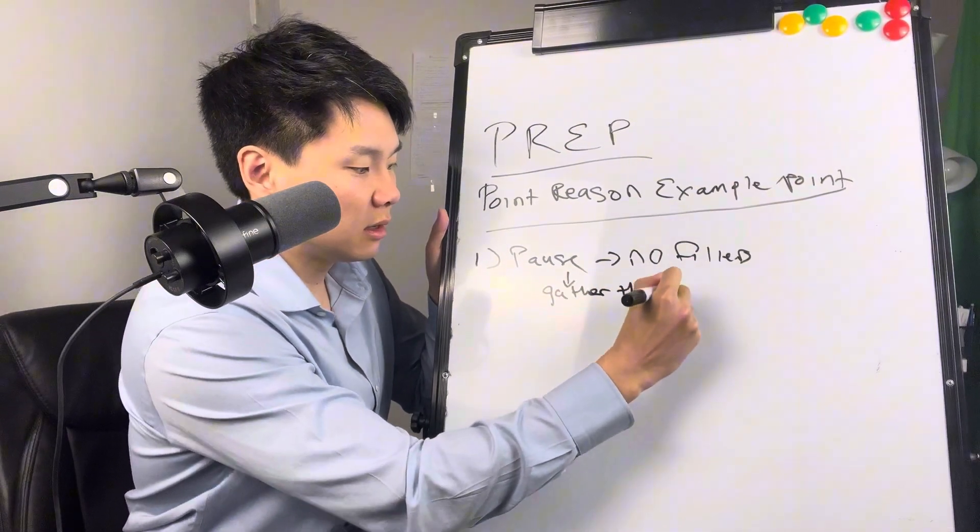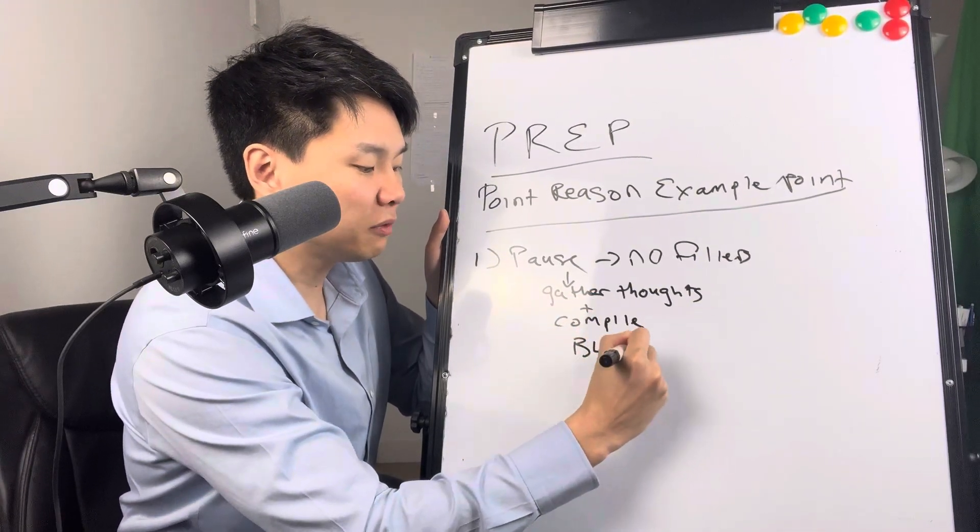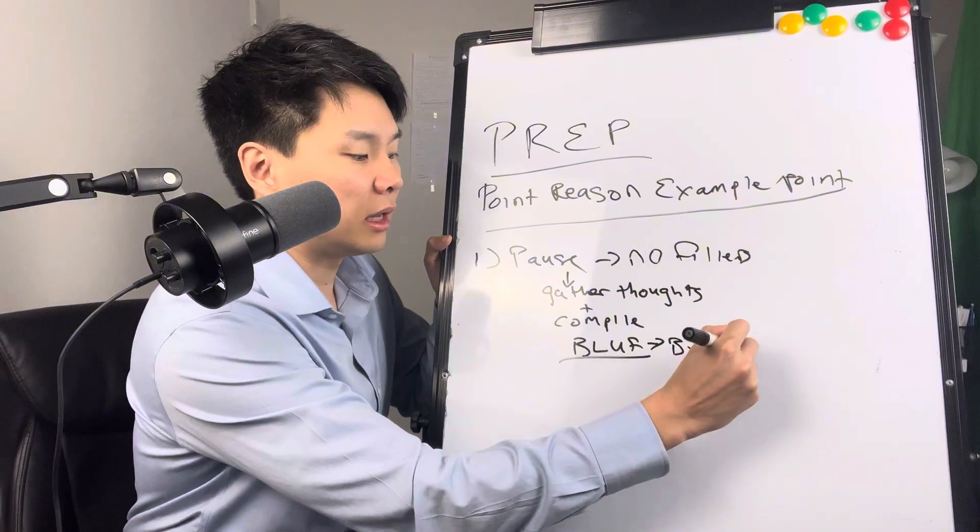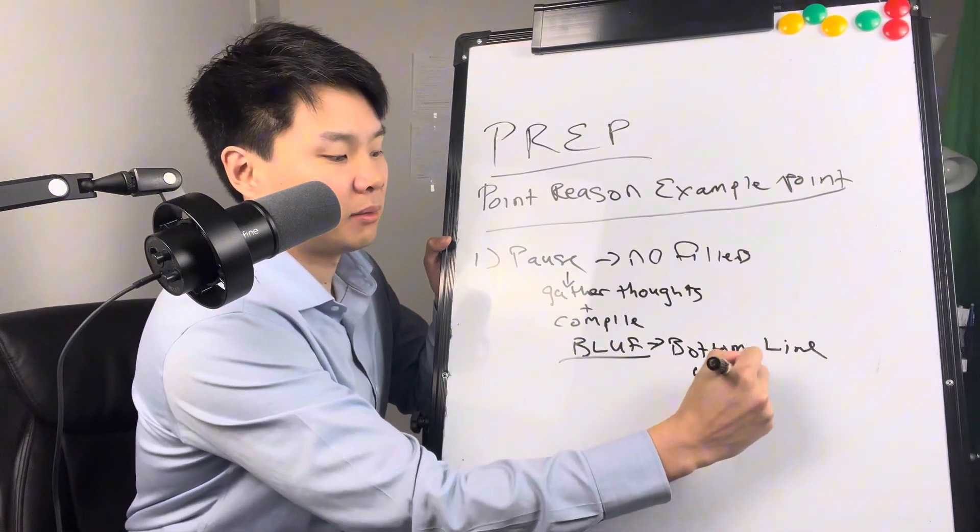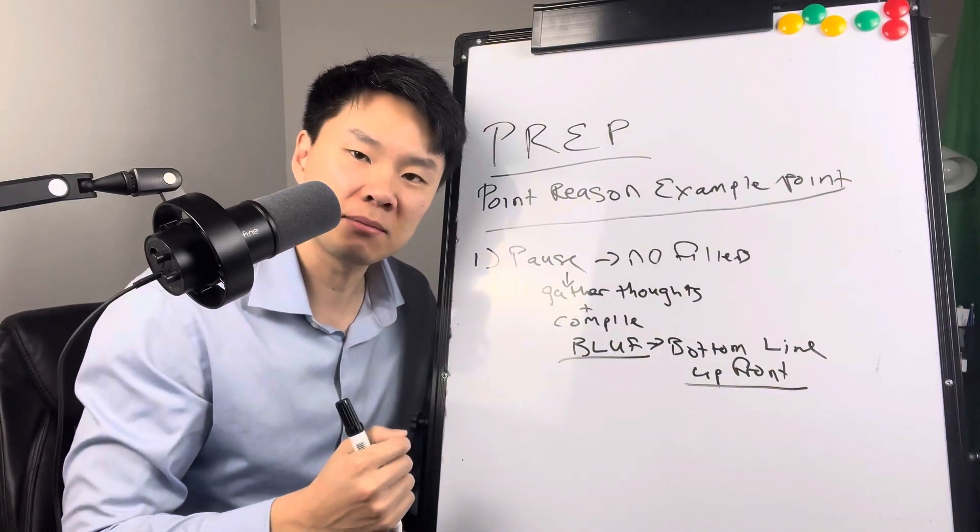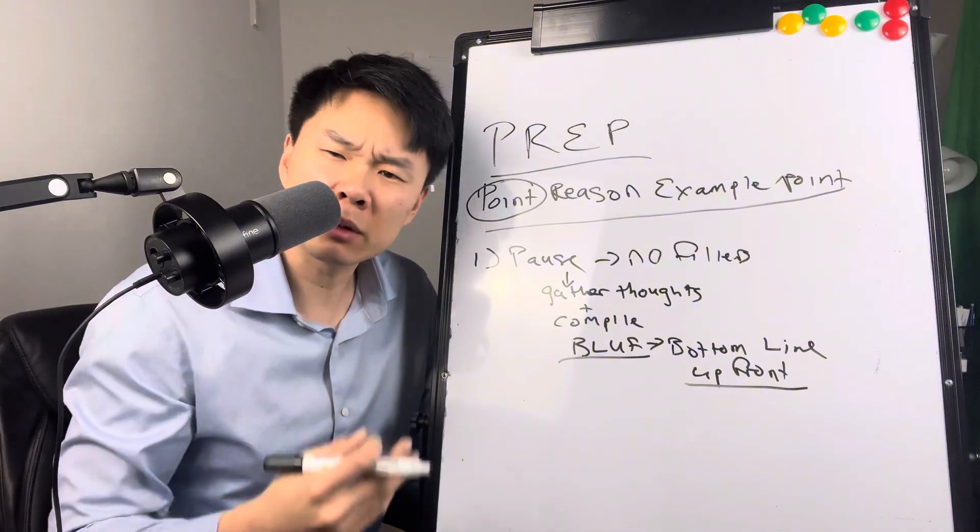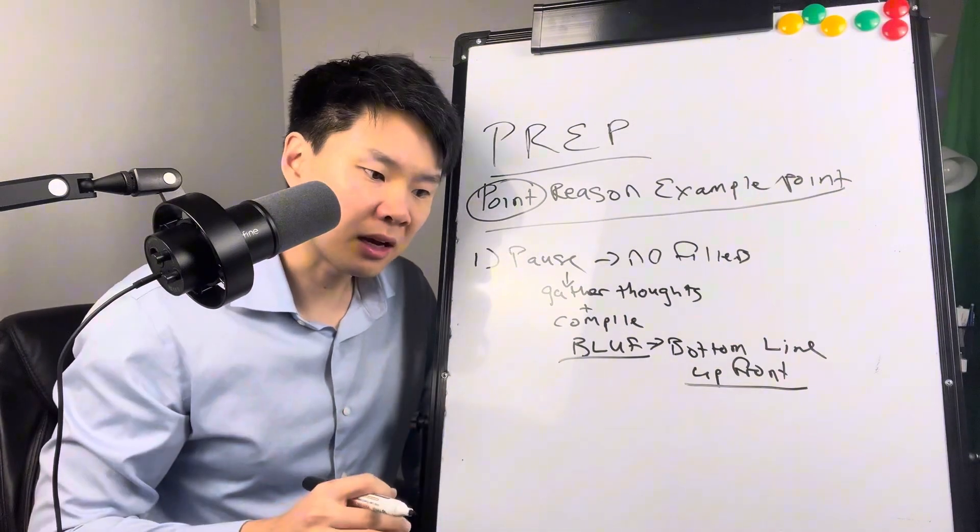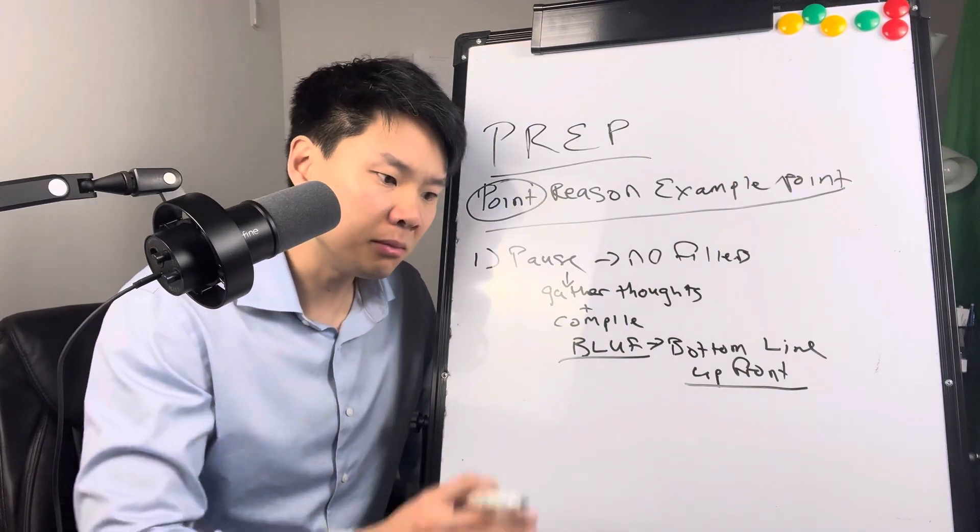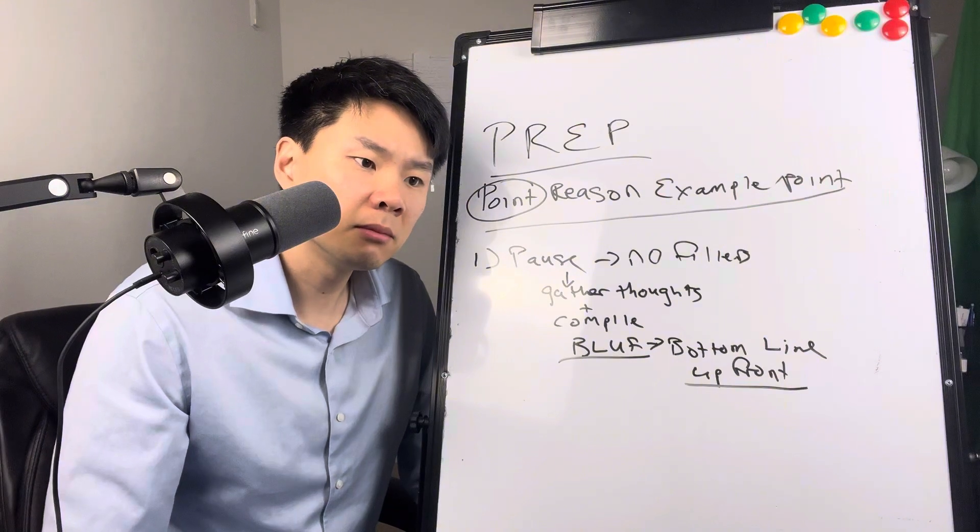And here's what you're doing when you're gathering your thoughts. Gather thoughts and compile what we call BLUFF. BLUFF is an acronym, a military communications acronym that stands for bottom line up front, meaning how would I answer the question in one sentence succinctly? And that's your point. So you could say, what are the big partner priorities this quarter?